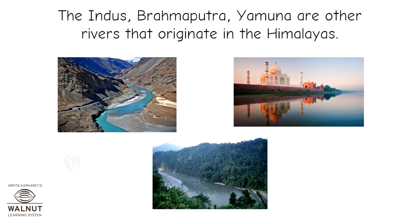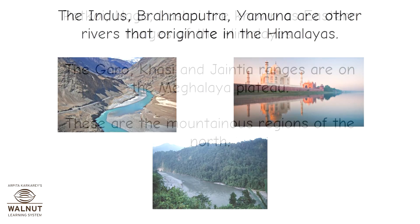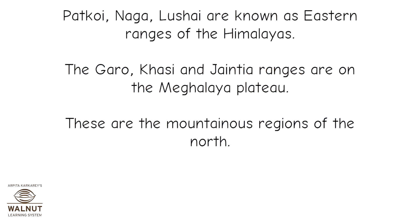The Indus, Brahmaputra, and Yamuna are other rivers that originate in the Himalayas. Patkoy, Naga, and Lushai are known as the eastern ranges of the Himalayas.